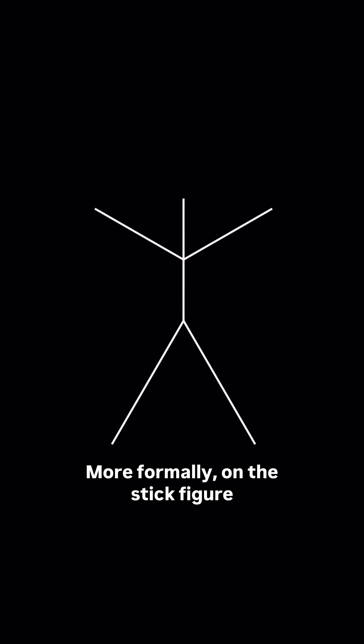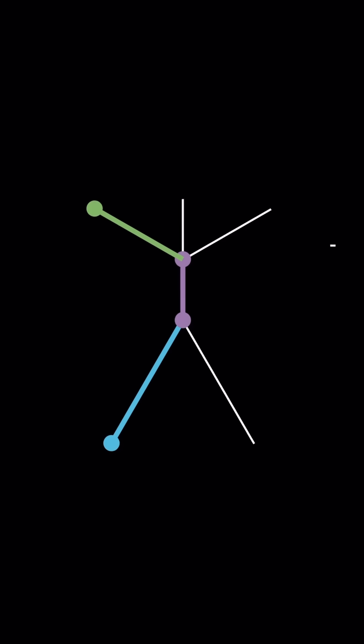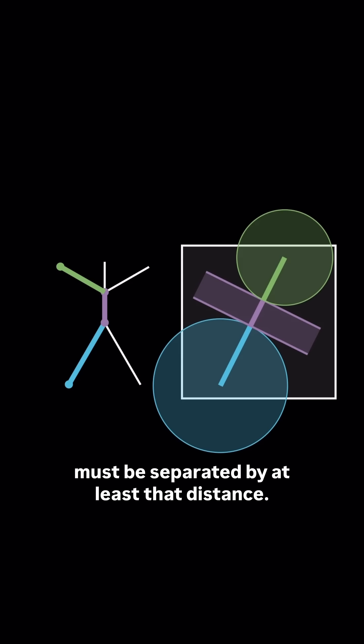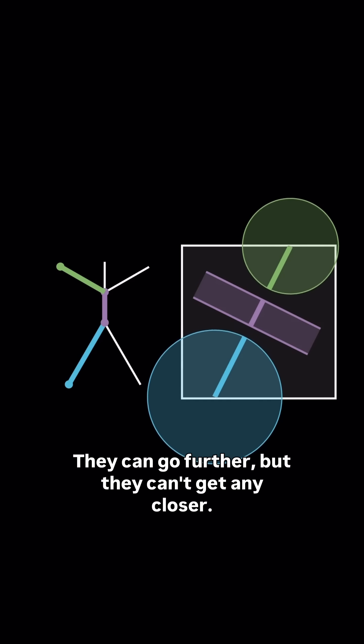More formally, on the stick figure any two points have the shortest path. On the paper, those points must be separated by at least that distance. They can go further, but they can't get any closer.